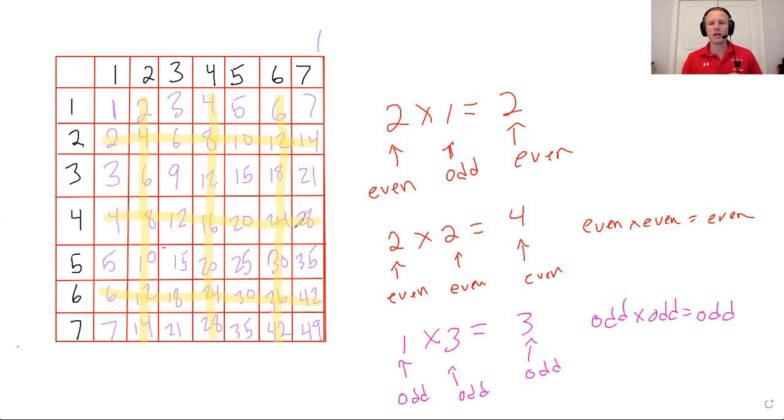So if you have, the only way to get an odd product is to have two odd factors. If you have one even factor, your product is going to be even. So even times odd equals even. So anytime you have an even factor, that is going to make it certain that your product is going to be even.